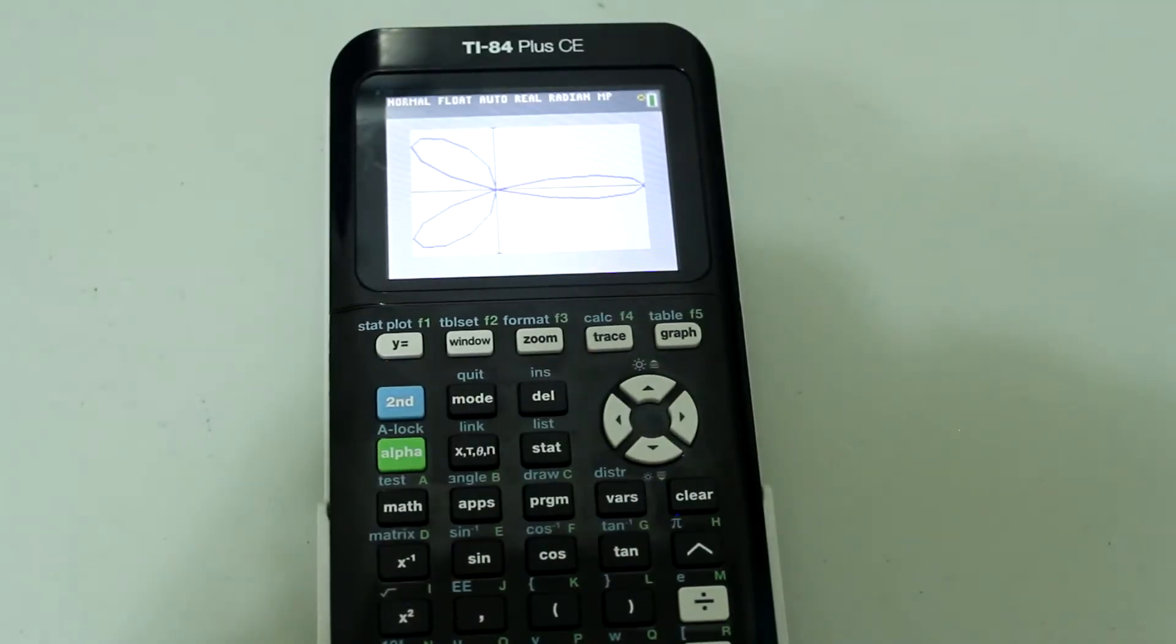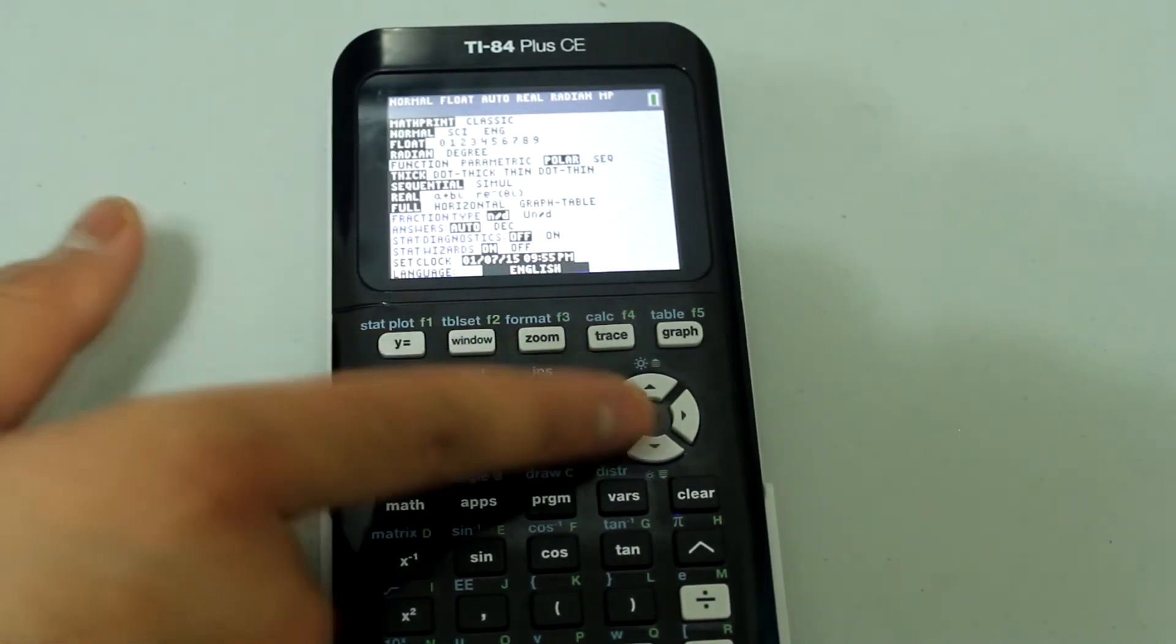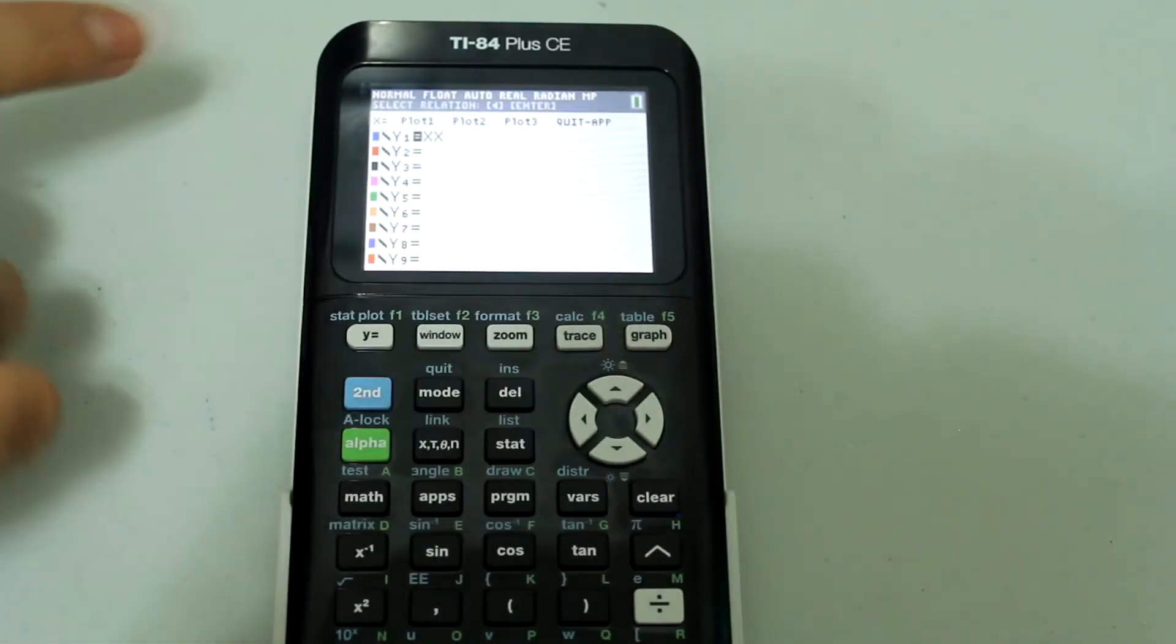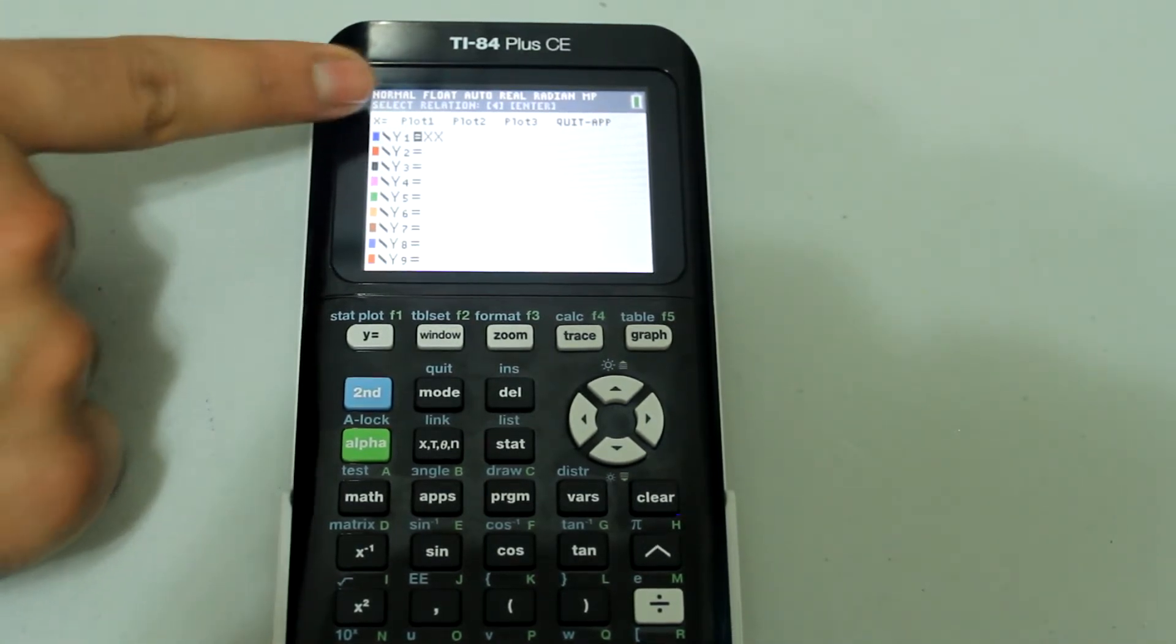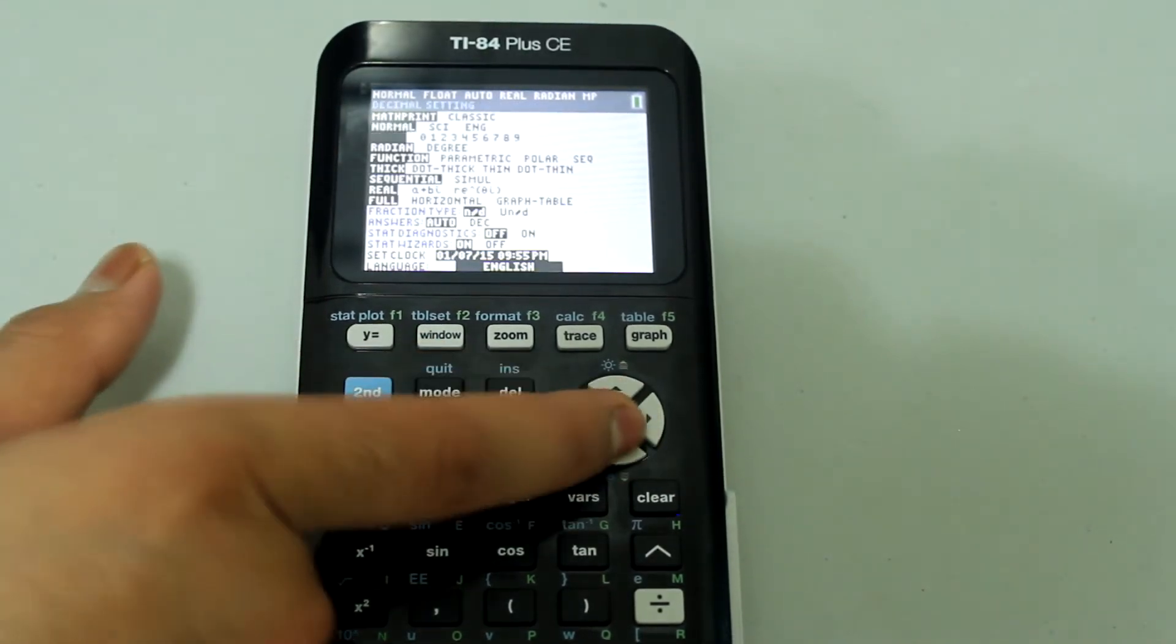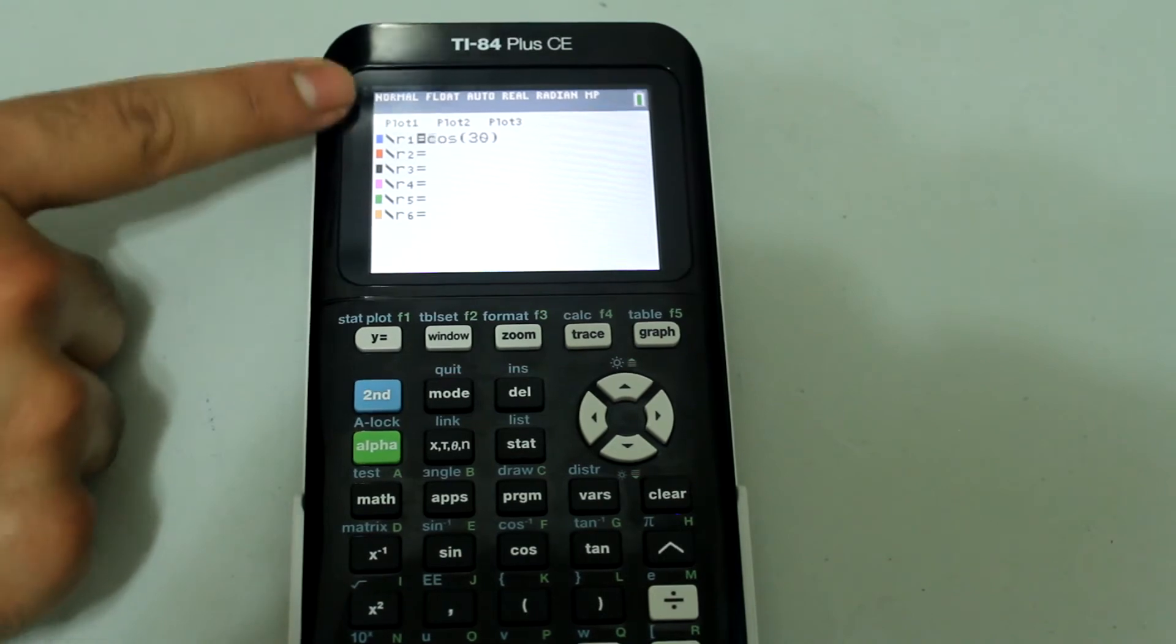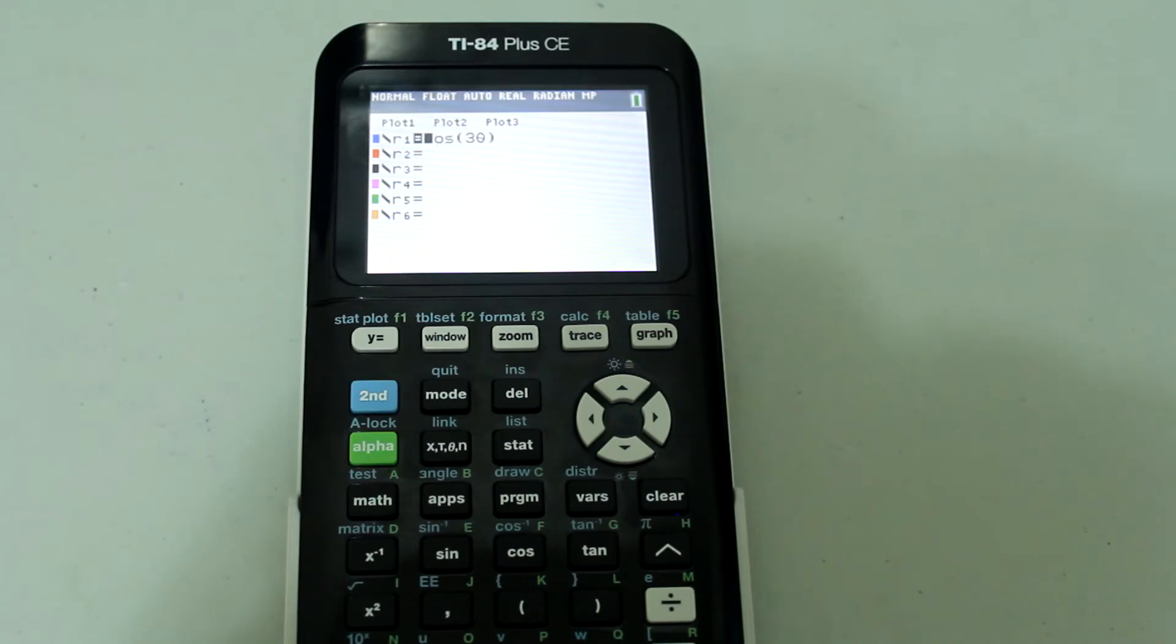And one more thing. If we now go back to mode and switch this from polar back to function, when I press Y equals, whatever inputs I had in the setting of function, those still are there. They are not erased. And if I go back to the polar setting, whatever input I had as the calculator was in polar setting is maintained. And there you have it.